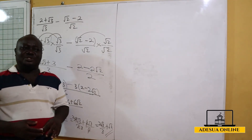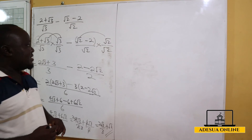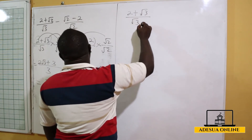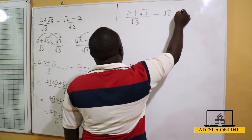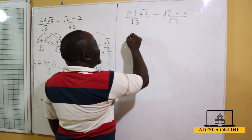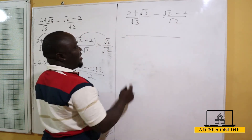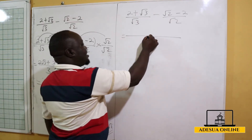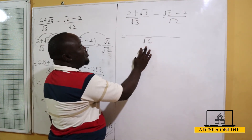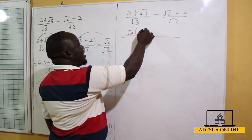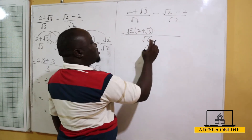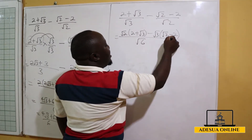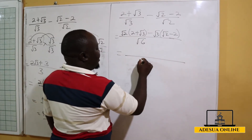Now for Method 2: instead of rationalizing each fraction first, we find the LCM of the denominators root 3 and root 2. The LCM is root 6. Root 3 goes into root 6, giving root 2, which multiplies 2 plus root 3. Root 2 goes into root 6, giving root 3, which multiplies root 2 minus 2. The LCM denominator is root 6.